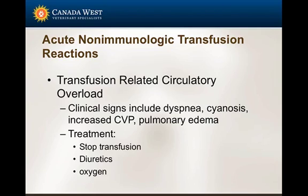Circulatory overload is a concern because blood is a colloid that tends to draw fluid into the vasculature, so it's possible to overload the patient. Clinical signs include respiratory signs, dyspnea, cyanosis, increased central venous pressure, and pulmonary edema as a consequence of fluid overload. This is where component therapy is more important. For an anemic animal — for example, one with autoimmune hemolytic anemia — giving whole blood provides many products they don't need; it's the red cells they need. Without component therapy, they may be more prone to circulatory overload.